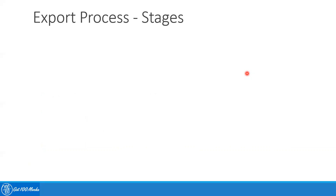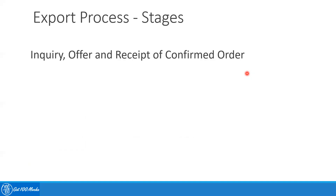The next phase is the inquiry, offer, and receipt of confirmed order. I've talked about it briefly in the previous video, but the confirmed order will typically contain the following information.